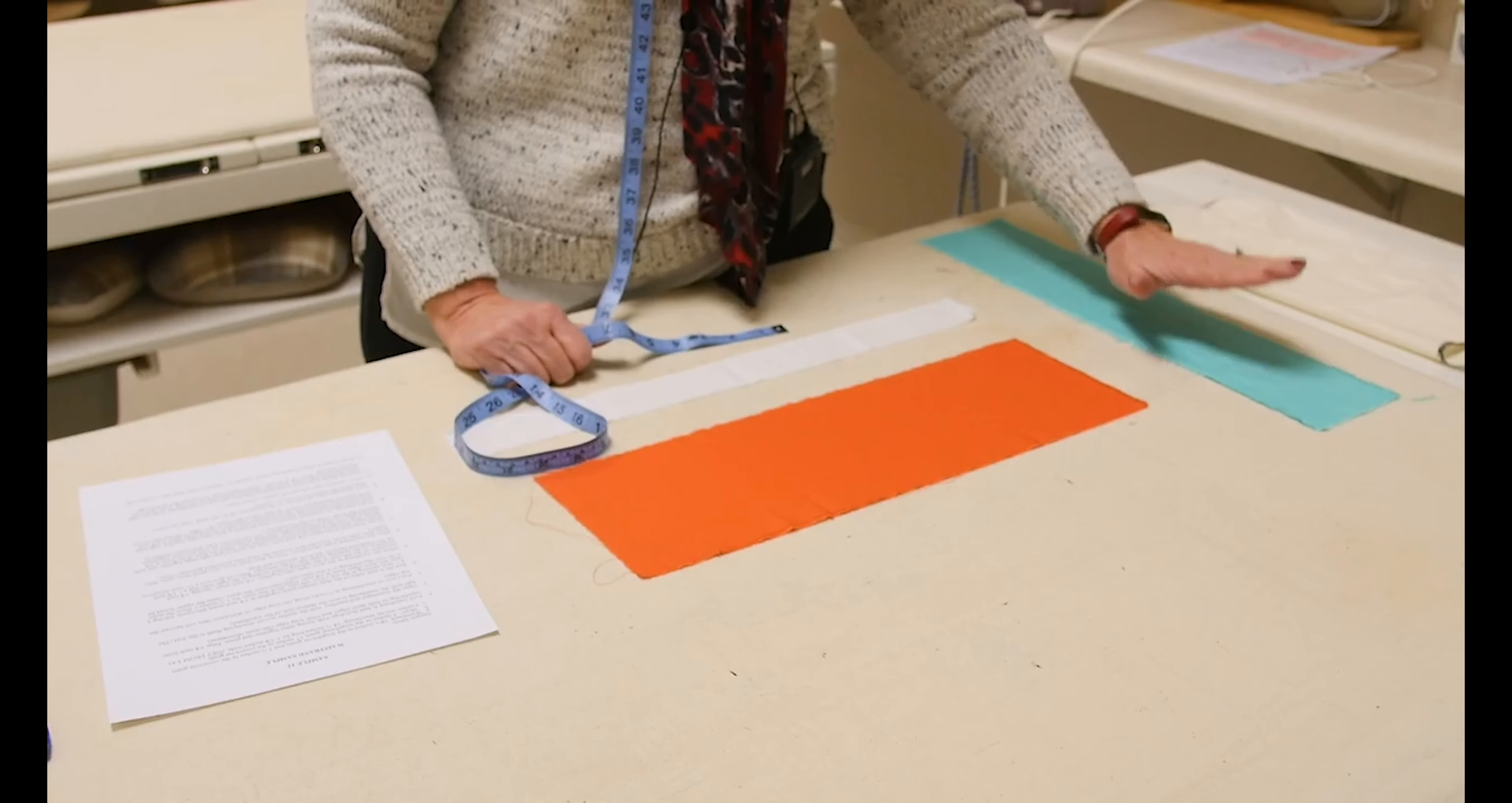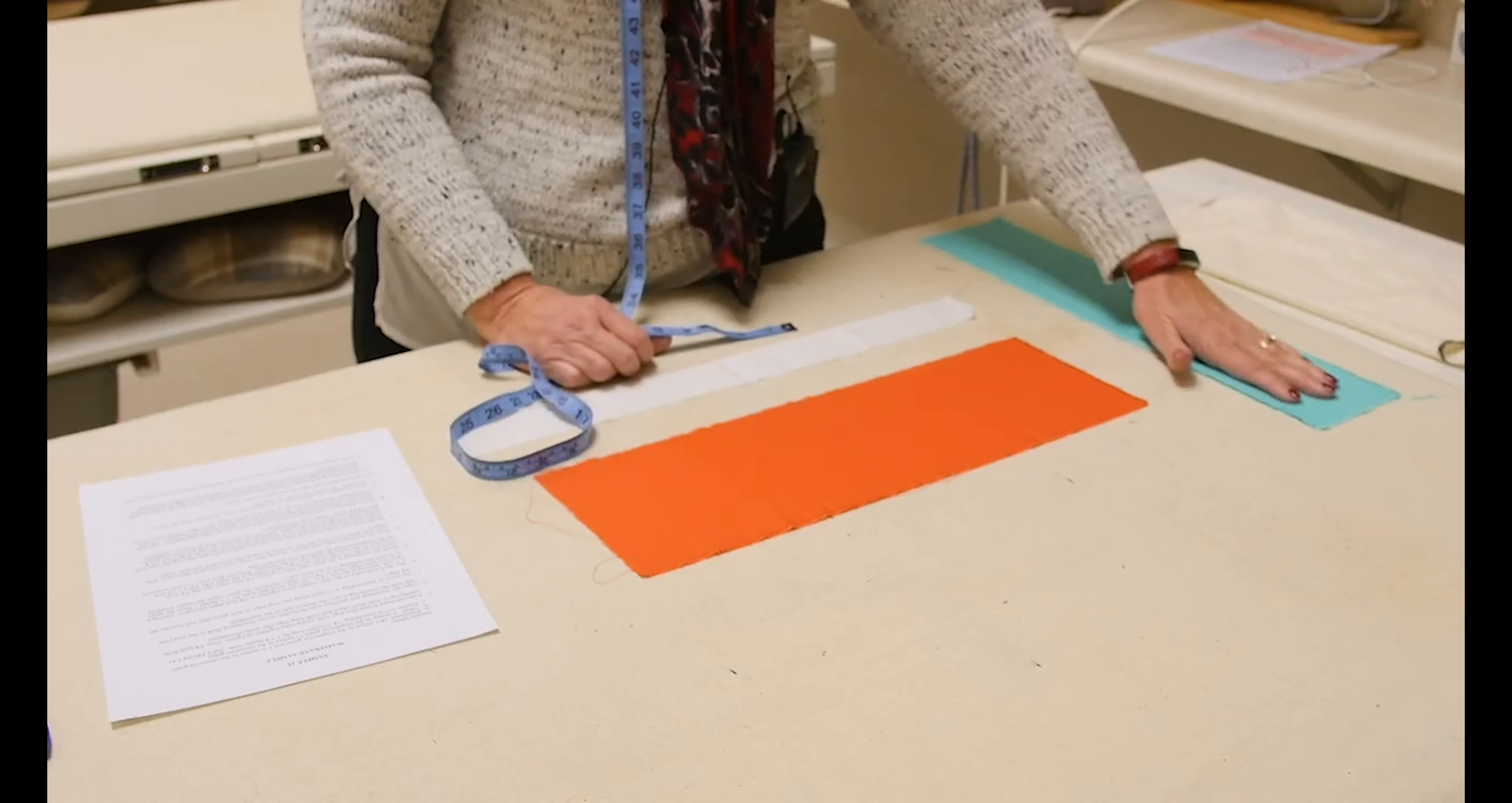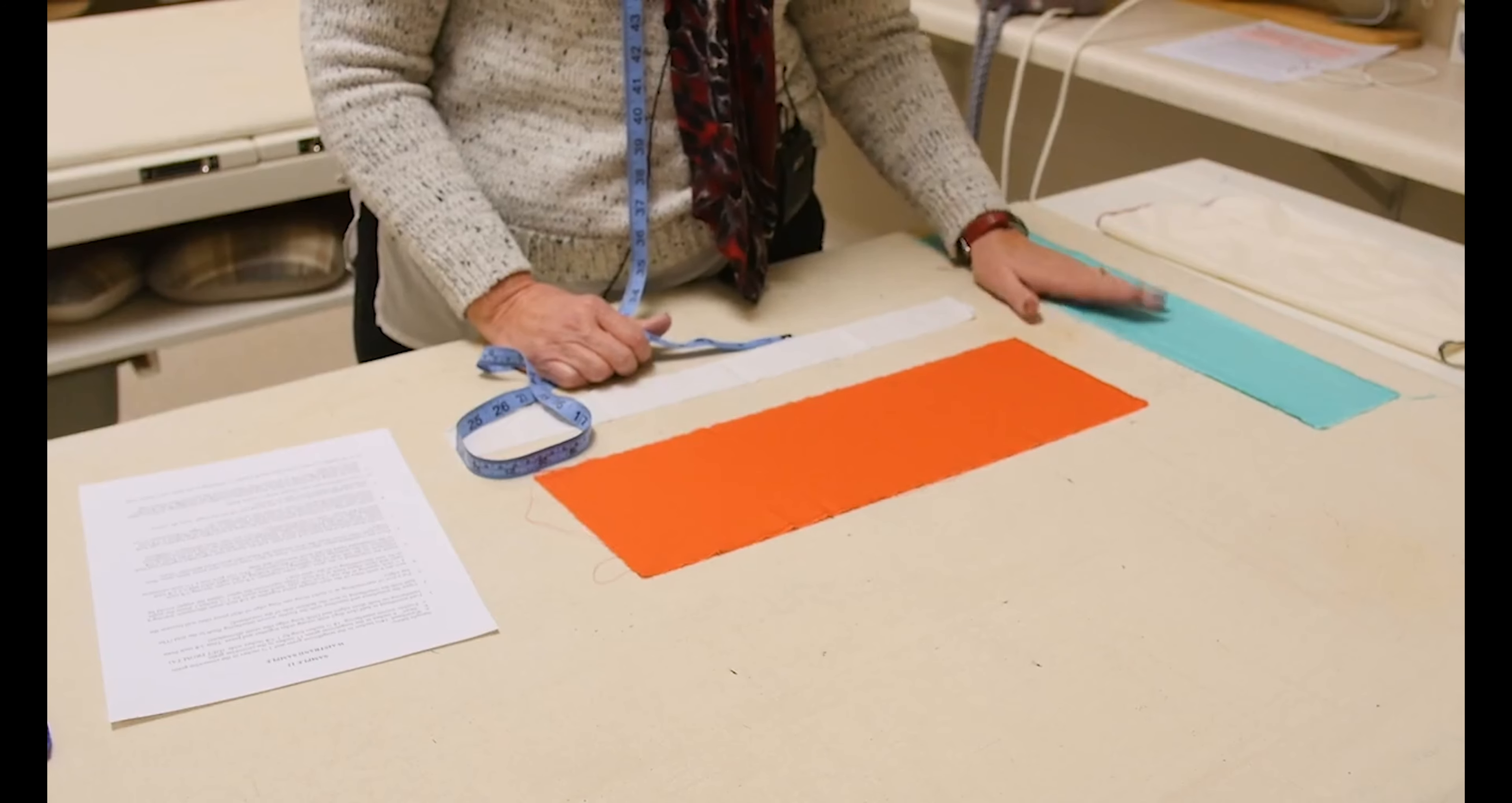The reason we use the lengthwise grain, even though it goes around our body, is because we want the strongest direction to hold in our waist and give more support there.